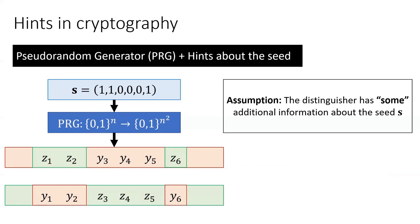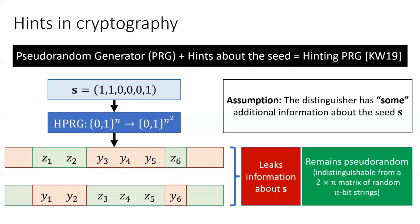Here is a toy example for s equals 110001. Clearly, this 2×n matrix of n-bit strings leaks some information about each bit of the seed, which is encoded into the arrangement of the elements in each row. A hinting PRG, introduced by Coppola and Waters in Crypto 2019, has the property that this matrix is pseudorandom even if the distinguisher has some hints about the seed.